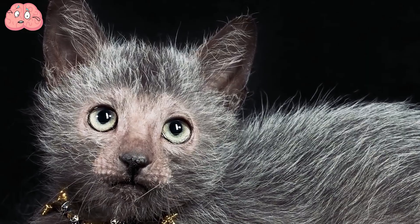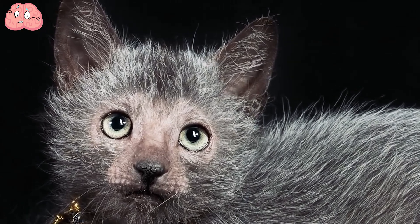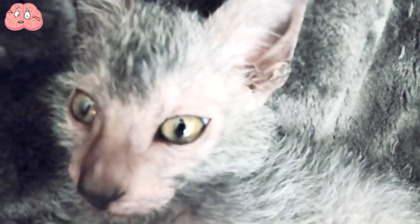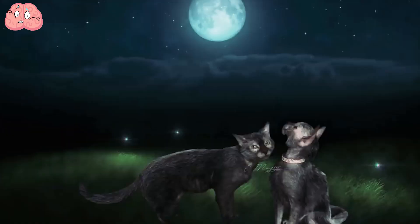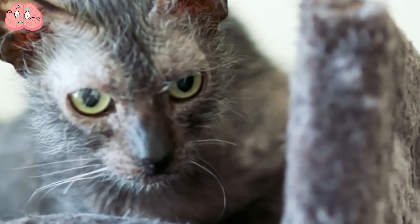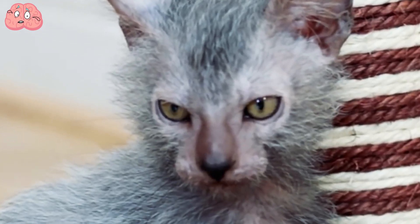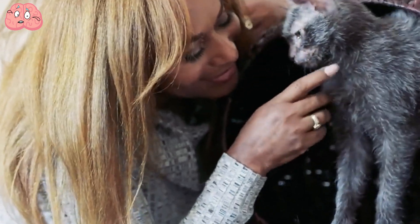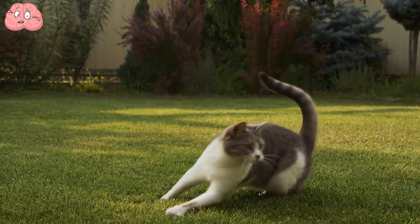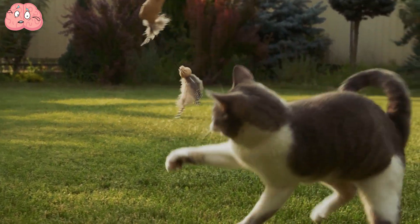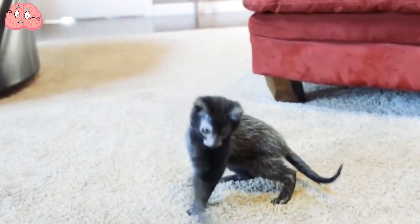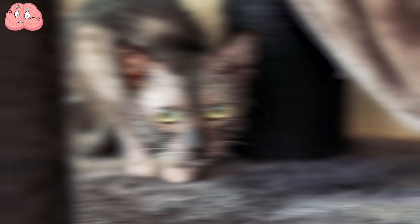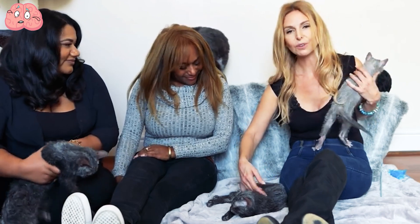There are several theories about how the Lykoi breed came to be. Some suggest that they arose unintentionally, while others propose that breeders intentionally bred mutant kittens to create these little werewolves. Another theory suggests that breeders crossed their domestic cat with a sphinx cat to produce the Lykoi. Despite their unusual appearance, these agile cats love to run and hunt. Although they are initially wary of strangers, they quickly adapt to them.